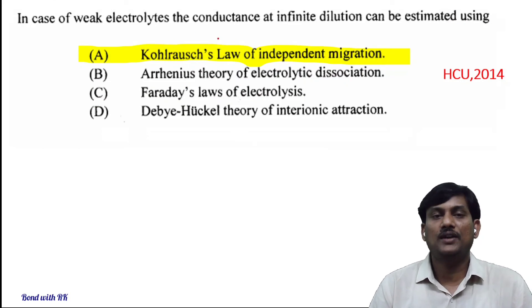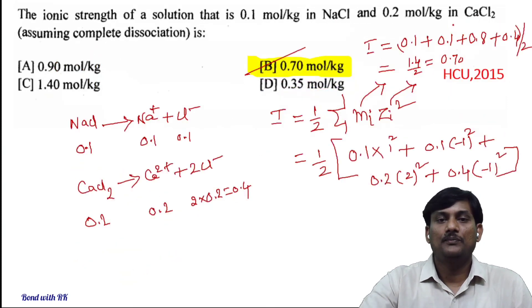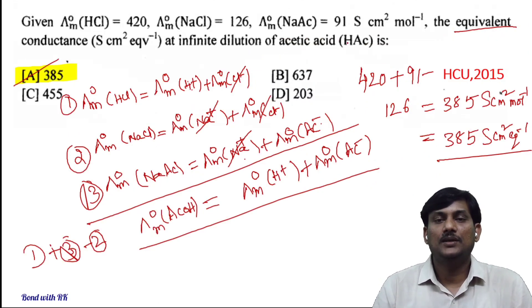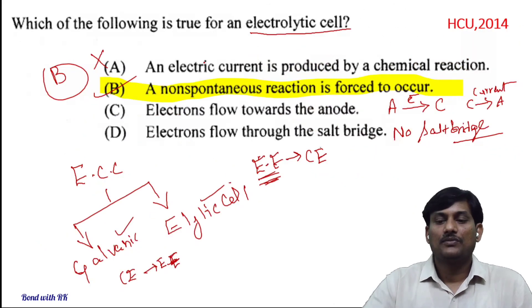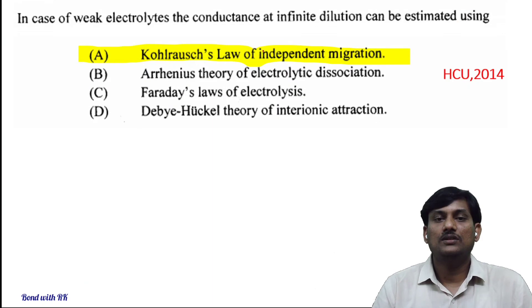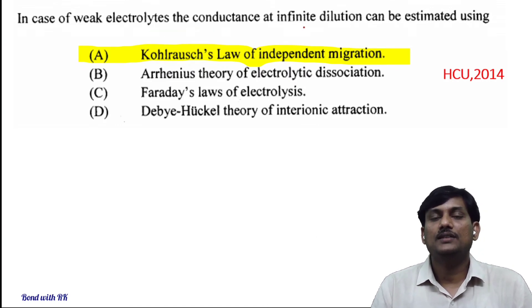In case of weak electrolytes, the conductance at infinite dilution can be estimated using: as shown in the previous example, we calculated the molar or equivalent conductance of a weak electrolyte — acetic acid — at infinite dilution by using Kohlrausch's law of independent migration of ions. So by using Kohlrausch's law, we can easily calculate the conductance of weak electrolytes at infinite dilution. Option A is the correct answer.